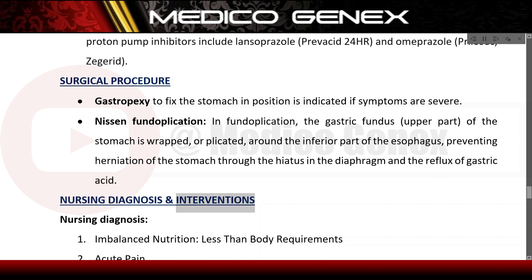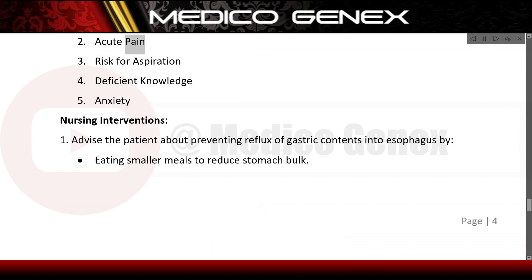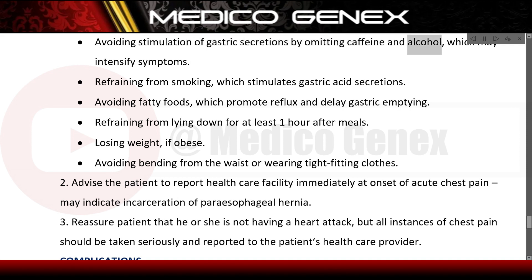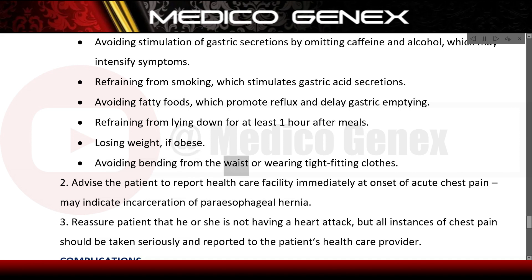Nursing diagnosis and interventions. Nursing diagnoses include: imbalanced nutrition less than body requirements, acute pain, risk for aspiration, deficient knowledge, and anxiety. Nursing interventions: advise the patient to prevent reflux by eating smaller meals, avoiding caffeine and alcohol, refraining from smoking, avoiding fatty foods, refraining from lying down for at least one hour after meals, losing weight if obese, and avoiding bending from the waist or wearing tight-fitting clothes.